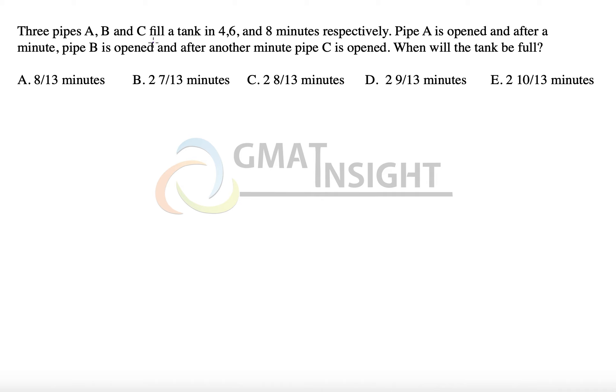Three pipes A, B, and C can fill a tank in 4, 6, and 8 minutes respectively. I will share with you two methods to answer this question. In fact, we can discuss three methods, but let me just quickly share with you how to make the simple equation by the old traditional method.